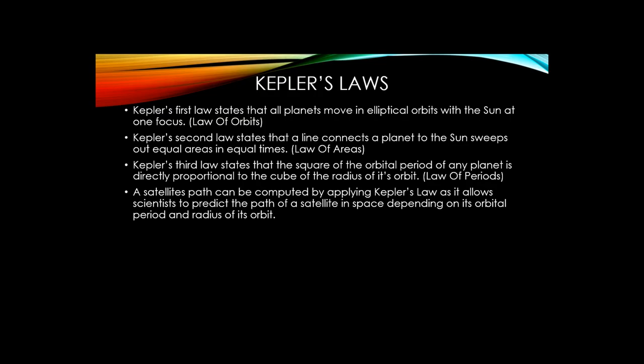Now I would like to move on to explain Kepler's laws. Kepler's first law states that all planets move in elliptical orbits with the sun at one focus — this is known as the law of orbits. Kepler's second law states that a line connecting a planet to the sun sweeps out equal areas in equal times — this is known as the law of areas. Kepler's third and final law states that the square of the orbital period of any planet is directly proportional to the cube of the radius of its orbit — this is known as the law of periods. Kepler's laws apply to satellites because a satellite's path can be computed by applying Kepler's laws, allowing scientists to predict the path of a satellite in space depending on its orbital period and radius of its orbit.